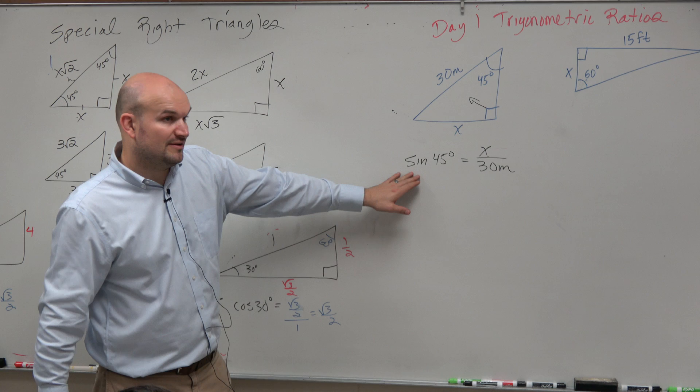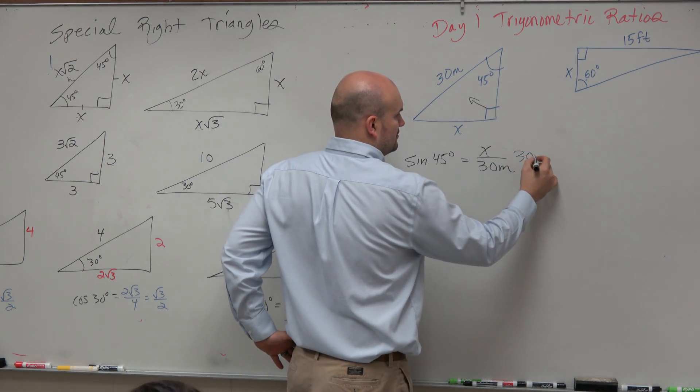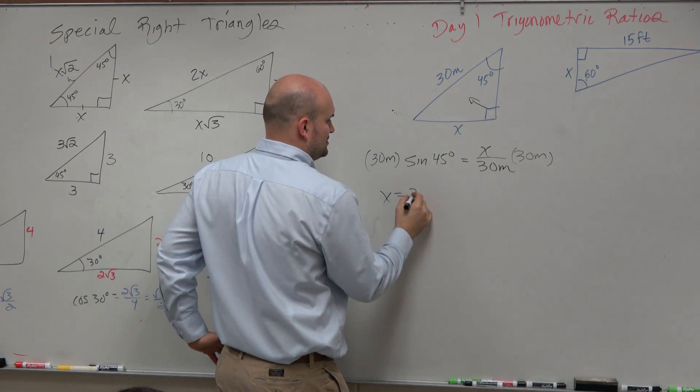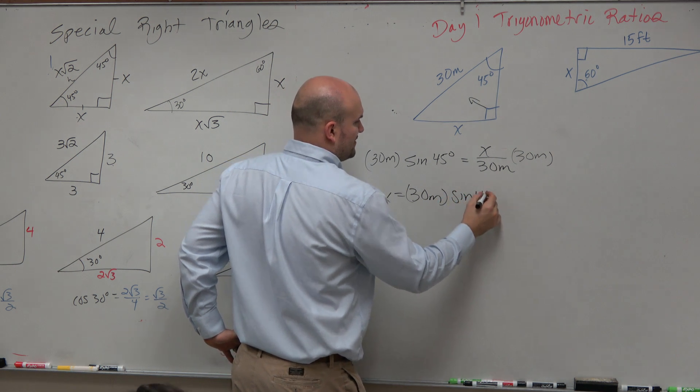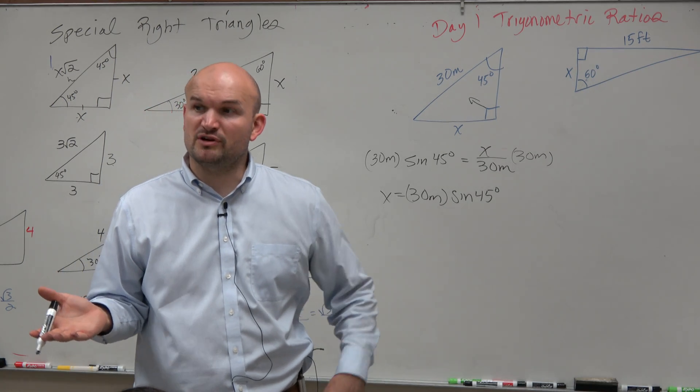Now, if I just wanted to solve for x, I would just multiply by 30 on both sides. And I'd say x equals 30 meters times the sine of 45 degrees. Now we'd have to figure out, well, what is the sine of 45 degrees? Now, those two triangles I wrote down over here.